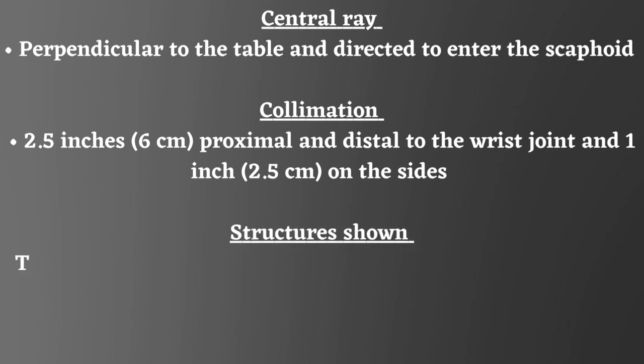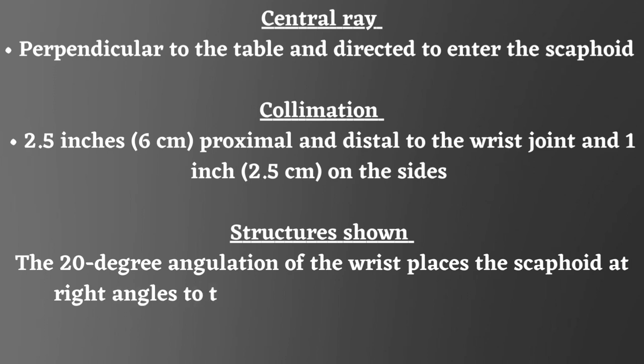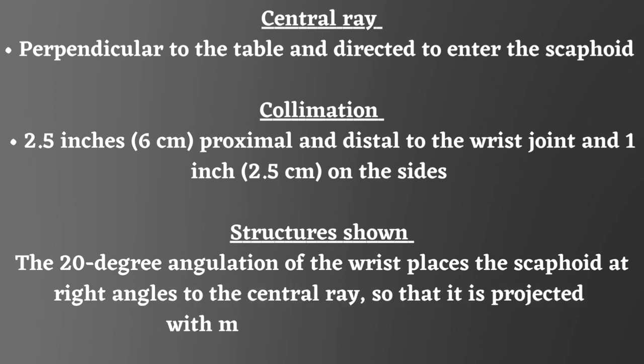Structures shown: the 20 degree angulation of the wrist places the scaphoid at right angles to the central ray, so that it is projected with minimal superimposition.